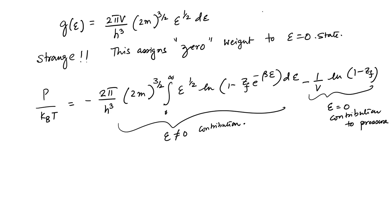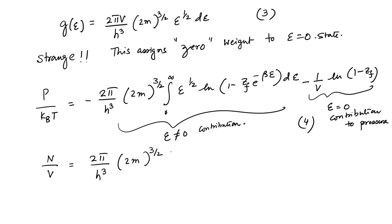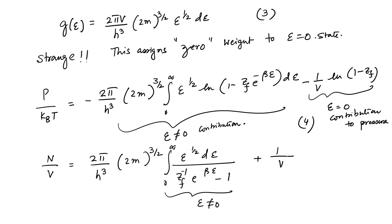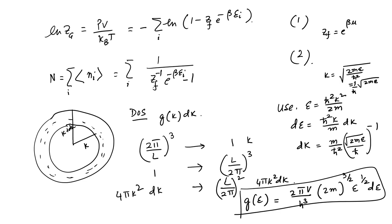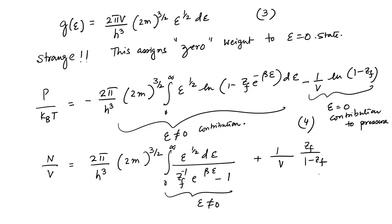The number equation (Equation 5) is: N/V = (2π/h³)(2m)^{3/2} ∫₀^∞ ε^{1/2}/(z_F⁻¹ e^{βε} − 1) dε plus the ε = 0 contribution, which is z_F/(1 − z_F). Setting ε = 0 in the Bose-Einstein distribution gives 1/(z_F⁻¹ − 1) = z_F/(1 − z_F). This is Equation 5.